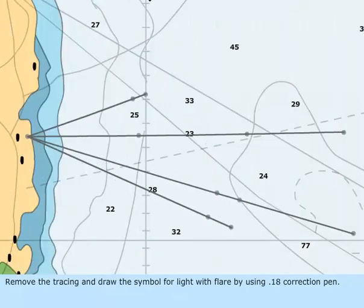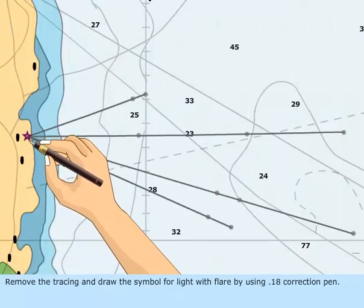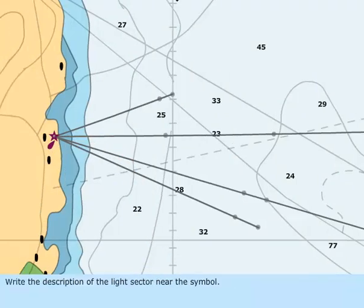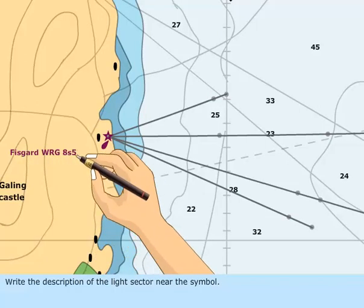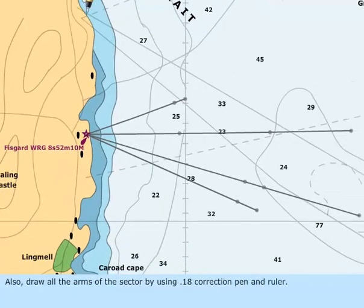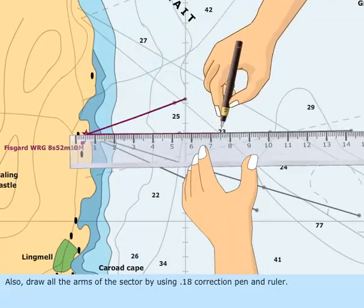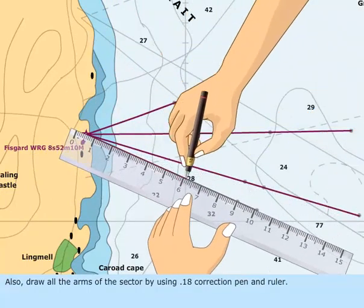Remove the tracing, and draw the symbol for light with flare by using a 0.18 correction pen. Write the description of the light sector near the symbol. Also, draw all the arms of the sector by using the 0.18 correction pen and ruler.